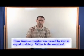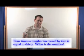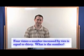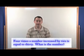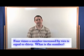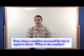So let's read it one more time. So four times a number increased by two is equal to 30. What is that number? So we have a number. That's what we're trying to find.